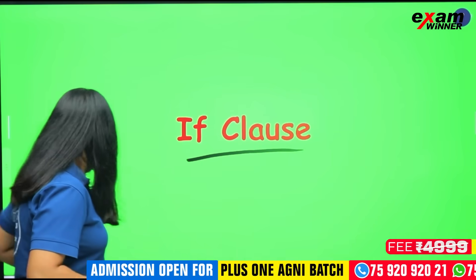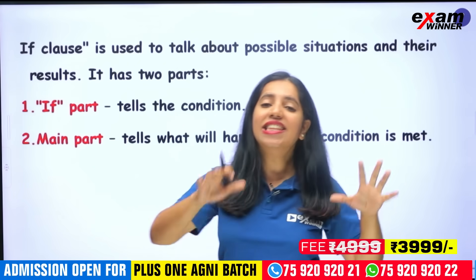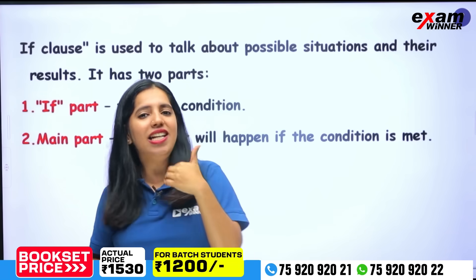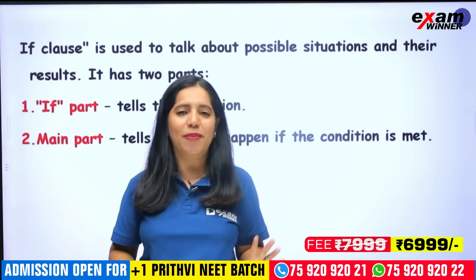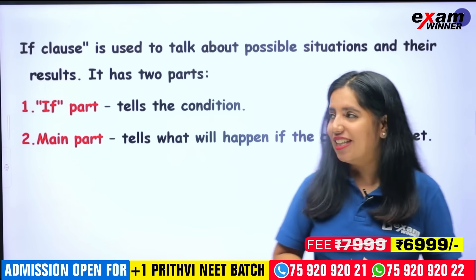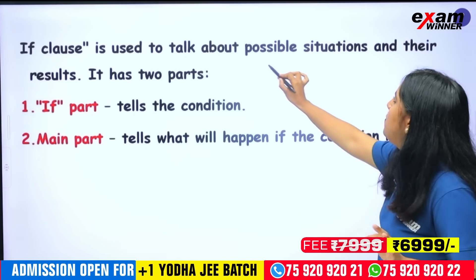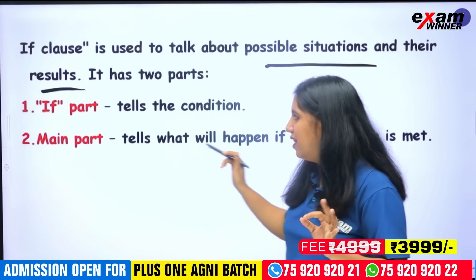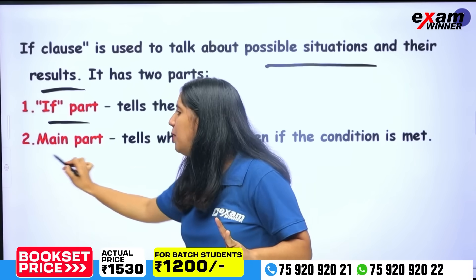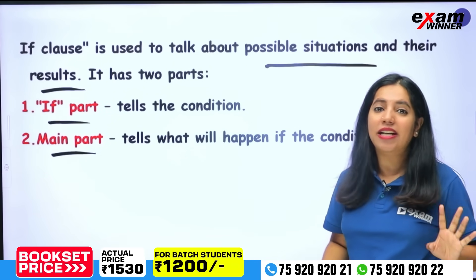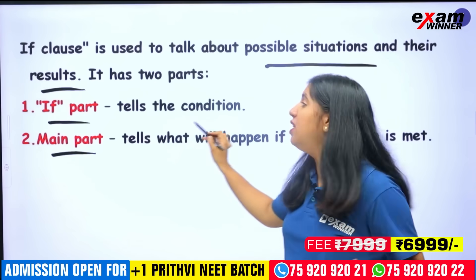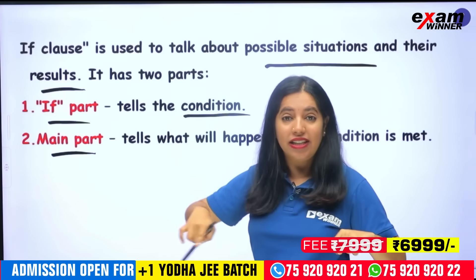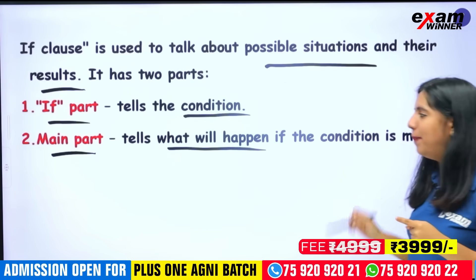If you are able to finish this, it will be completed — if close. If you are familiar with a condition, you will know your condition. If close is used, the result will be a possible situation. These two things come in a sentence: two parts — the if part and the main part. The if part is called the condition. That is the condition. The main part tells what will happen if the condition is met.